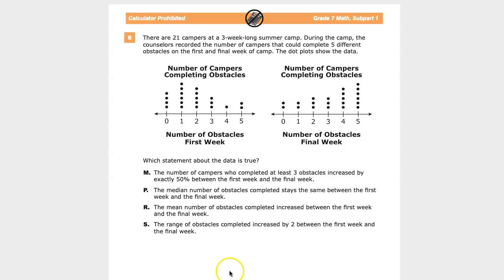As you can see, more people in the beginning of the camp could get that first obstacle down, but it kind of peters off. Of course, you have a couple who could do all five, but it starts to, they made some progress. That's good. Which statement about the data is true?